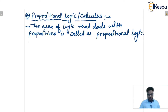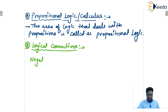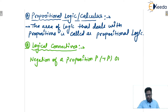Next we will see logical connectives. Logical connectives are operators which are used to connect logical statements, that is propositions. First, we will see what is negation, after that we will see the other logical connectives.